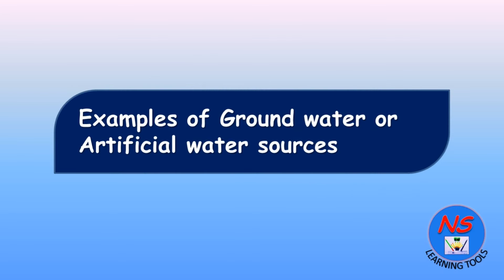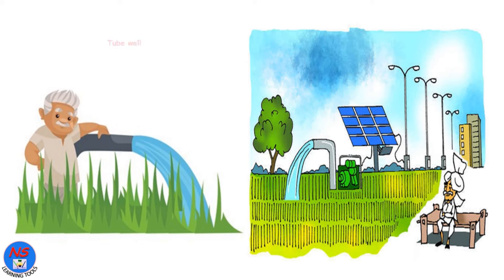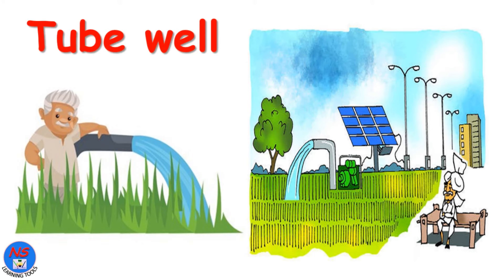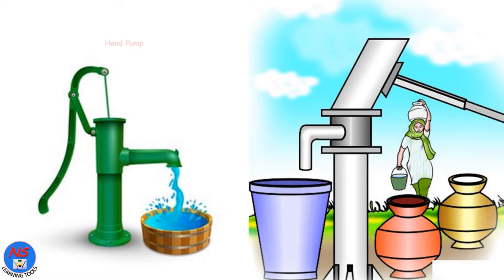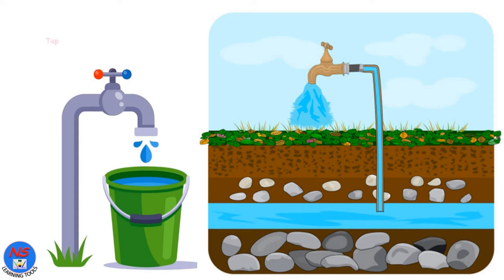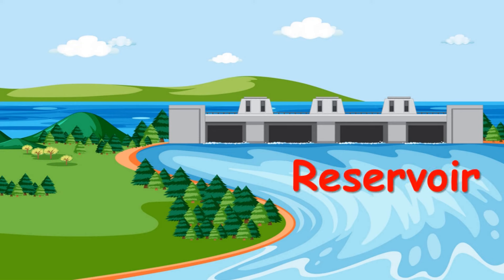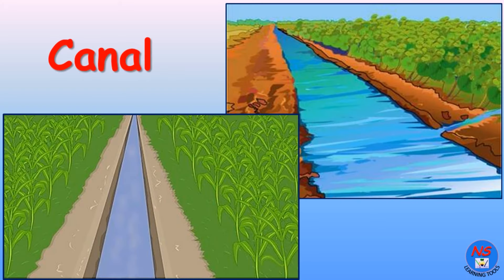Examples of groundwater or artificial water sources: well, tube well, hand pump, tap, reservoir, canal.